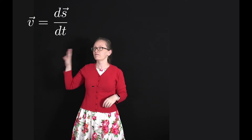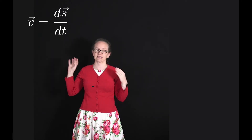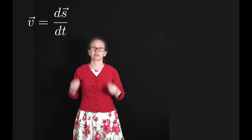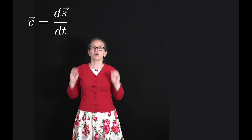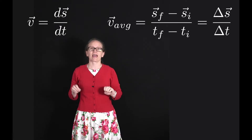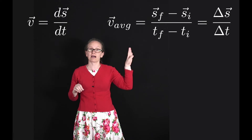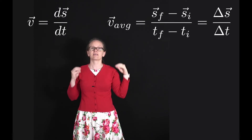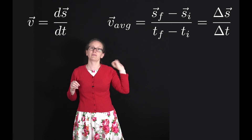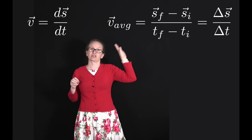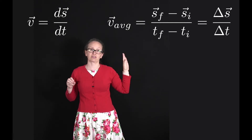The instantaneous velocity can be written as v equals ds/dt — that is, it's the derivative of the displacement with respect to time. The average velocity can be written as the final displacement minus the initial displacement divided by the final time minus the initial time, which can also be written as the change in displacement divided by the change in time.